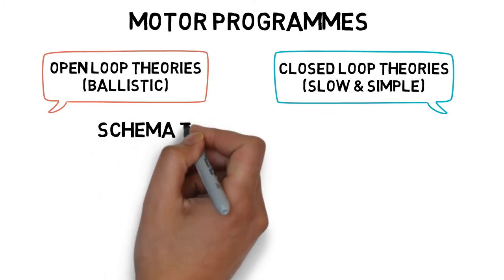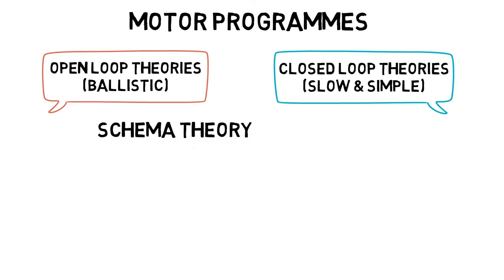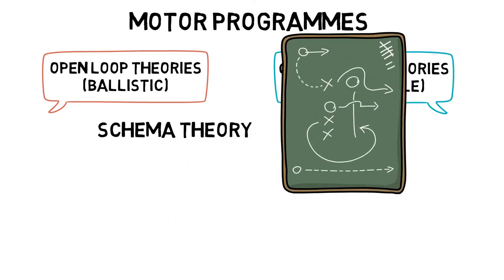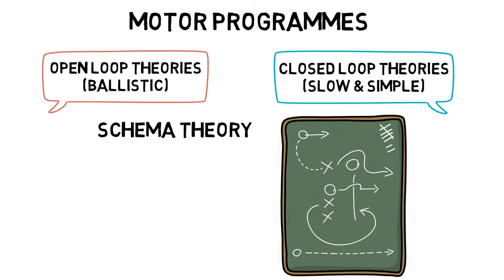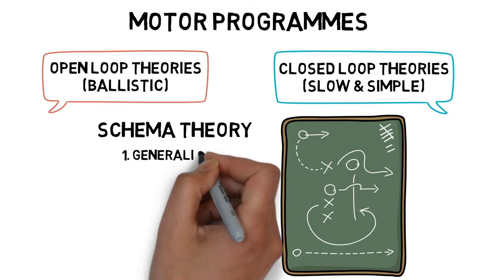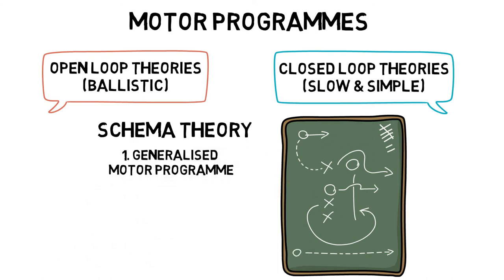Schema theory suggests motor programs are changeable and adapt to each situation. To perform a skill, we need three things. A generalized motor program, which is the ability to perform a basic skill such as catching a ball.